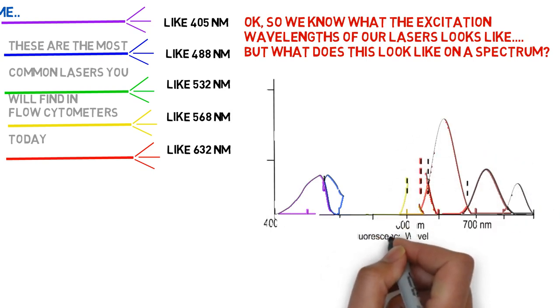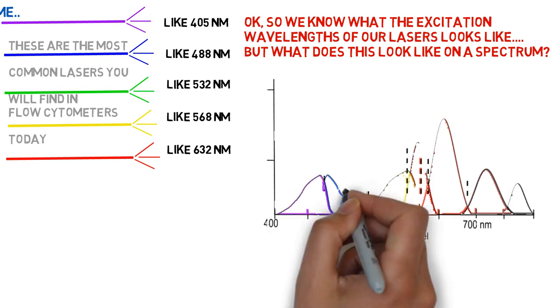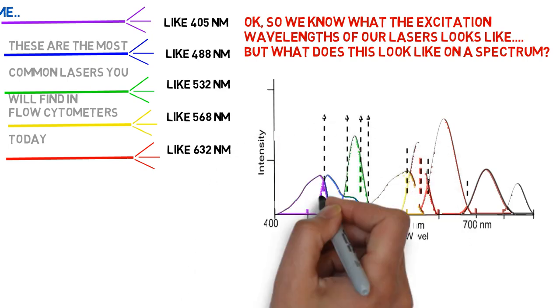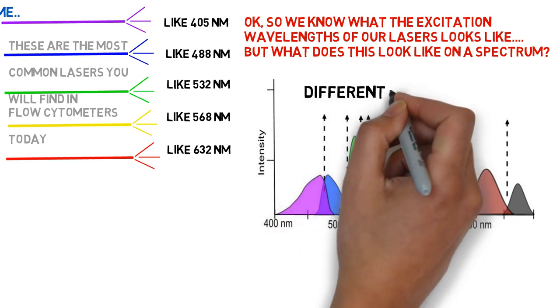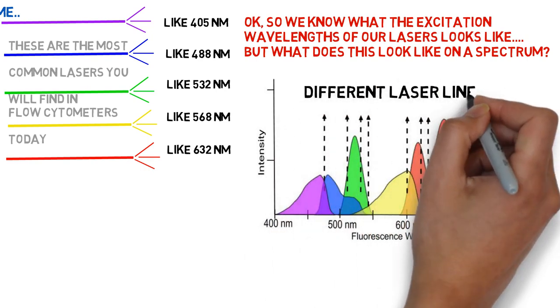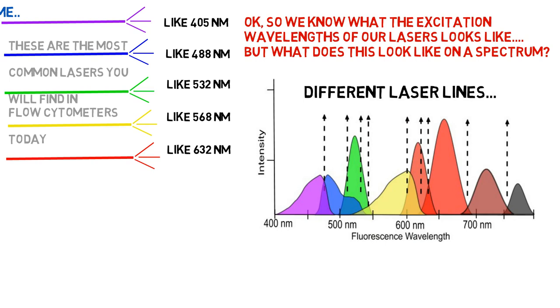When we place known lasers, we get something like this chart. Note that when we combine lots of fluorescent dyes, we cover the entirety of the visible spectrum. And conveniently, the lasers we use are nicely sequenced along this spectral chart.